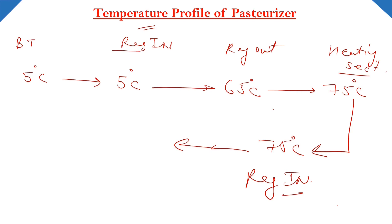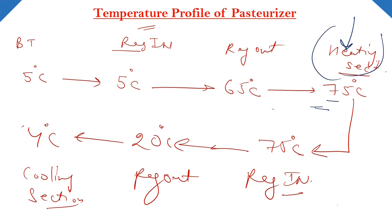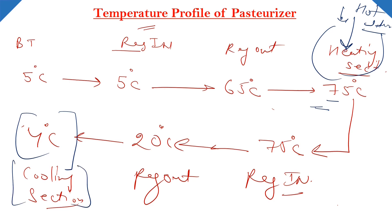Then it will cool down to 20 degree Celsius. 20 degree Celsius se milk humara bahar nikla. Then it will go to the cooling section jahan pe milk ko 4 degree Celsius tak thanda kiya jayega. Heating section mein milk humara 75 degree Celsius tak heat kiya ja raha hai by using hot water. Hot water ya steam ka istamal humara kar sakte hain. Whereas in cooling section milk ko cool down karne ke liye ham log chilled water ka istamal karte hain.